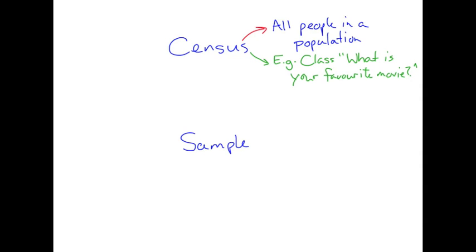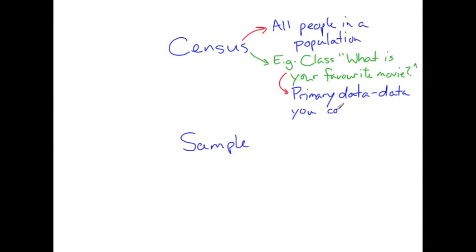Also, since we are collecting this data ourselves, this data is called primary data. Primary data is data that you collect yourself. You write the survey, you collect the survey data, and you put it all together — that is primary data.